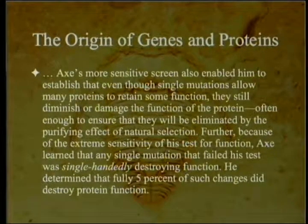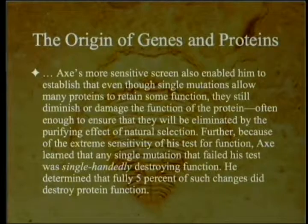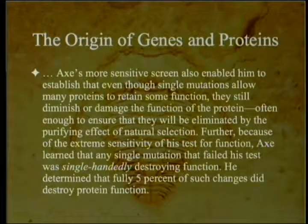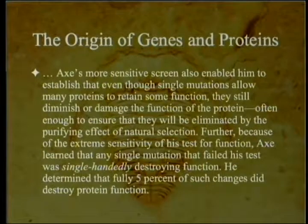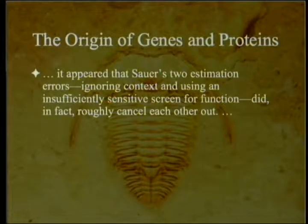Axe's more sensitive screen showed that even though single mutations allowed many proteins to retain some function, they still diminished or damaged function — often enough to ensure elimination by the purifying effect of natural selection. Any single mutation that failed his test was single-handedly destroying function. He determined that fully 5% of such changes destroyed protein function entirely — meaning in those areas, the amino acid had to be precisely the one present. It appeared that Sauer's two estimation errors, ignoring context and using an insufficiently sensitive screen for function, did in fact roughly cancel each other out.